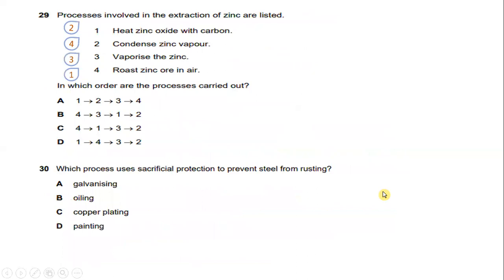Looking at question 29: processes involved in the extraction of zinc are listed. In which order are the processes carried out? First, step 4: roast zinc ore in air. Then step 1: heat zinc oxide with carbon. Then step 3: vaporize the zinc. Finally, step 2: condense the vapor. So the order is 4, 1, 3, 2. The answer is C.